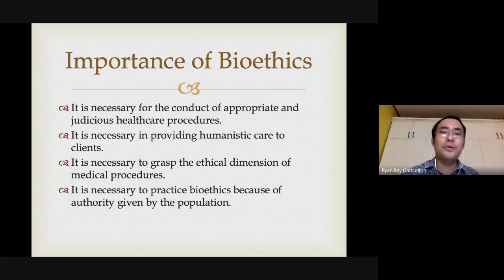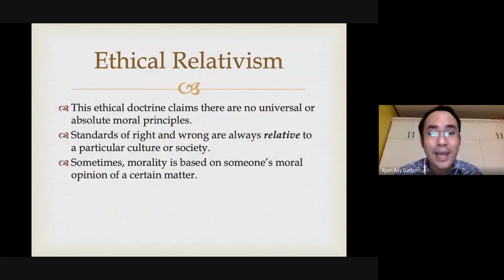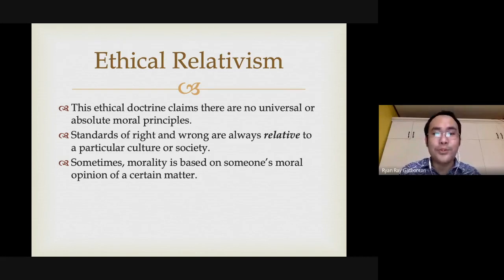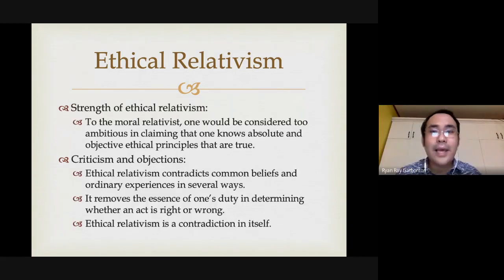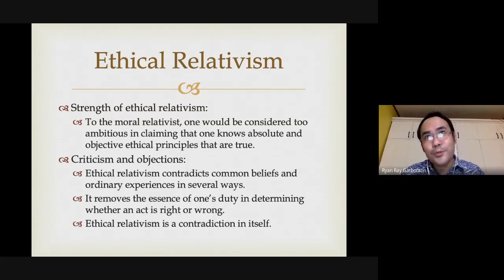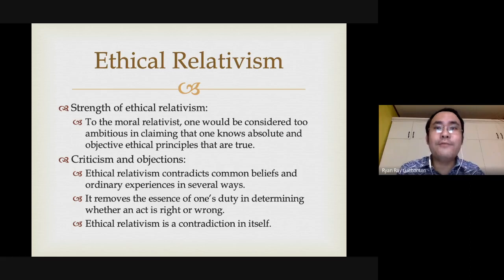Let's review some ethical schools of thought discussed last semester. Ethical relativism is the ethical doctrine that claims there are no universal or absolute moral truths — you judge the rightness or wrongness of an action based on someone's standard or the standard where the action occurred. Ethical relativism is good at some point because it does not impose rigid standards to a particular situation. However, it is dangerous because the value of universal truth — which is important in healthcare since healthcare is multicultural — becomes undermined.